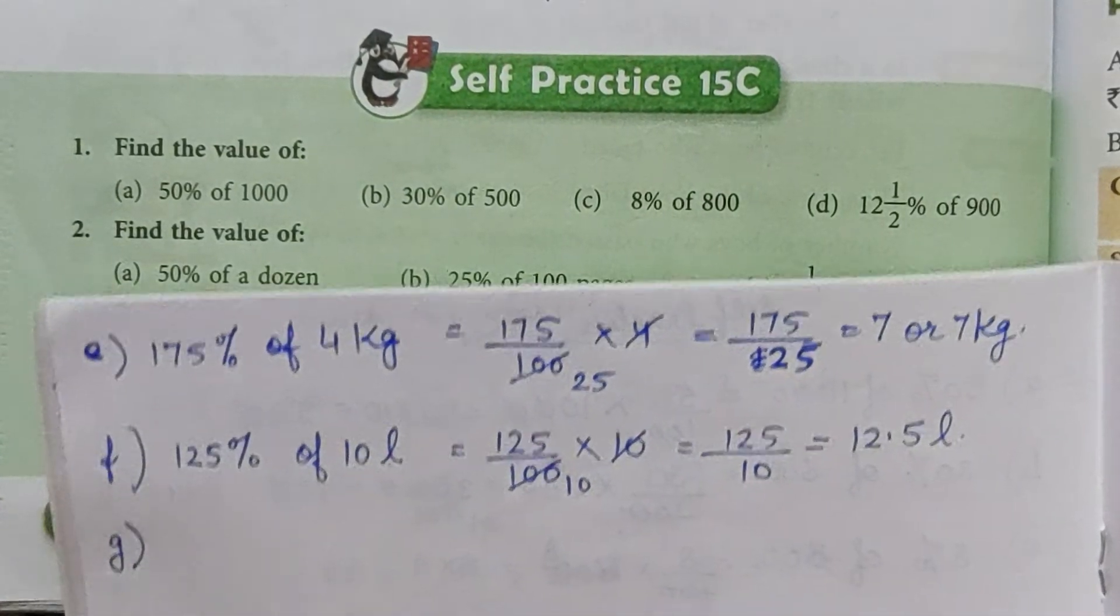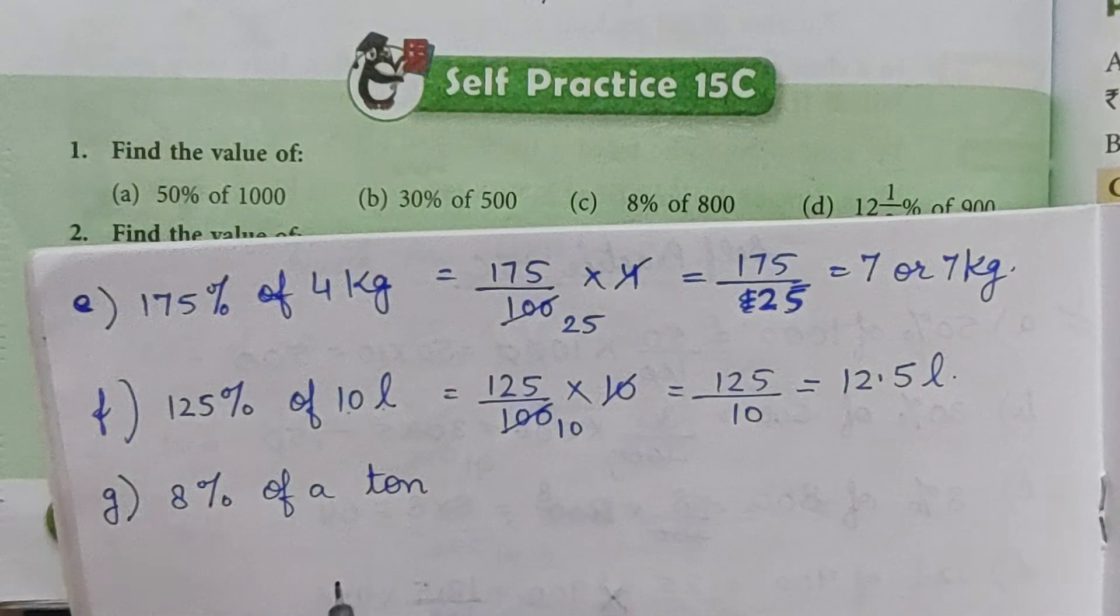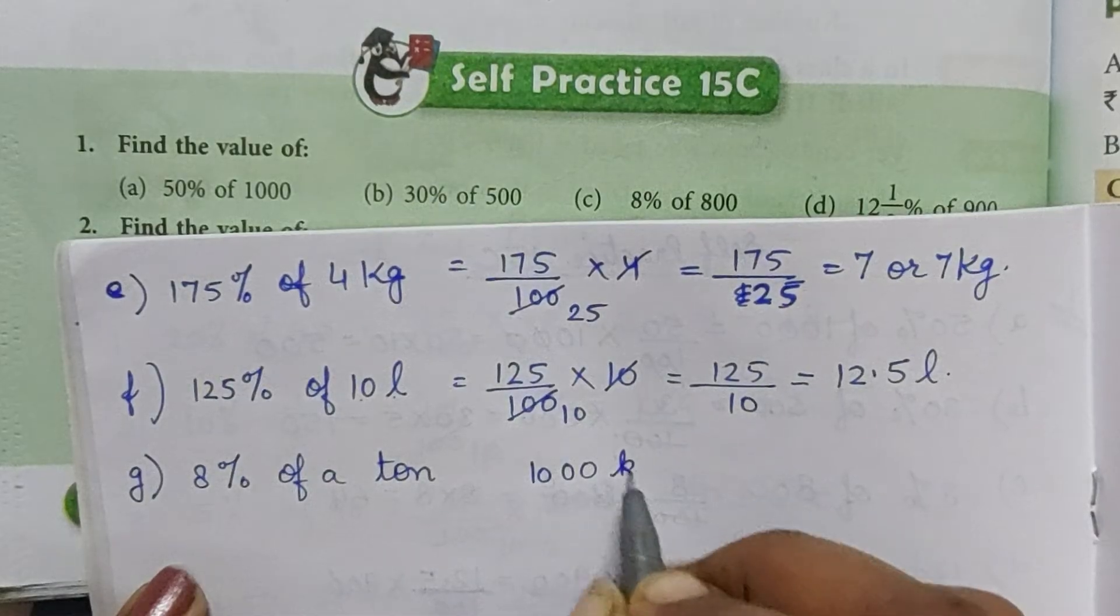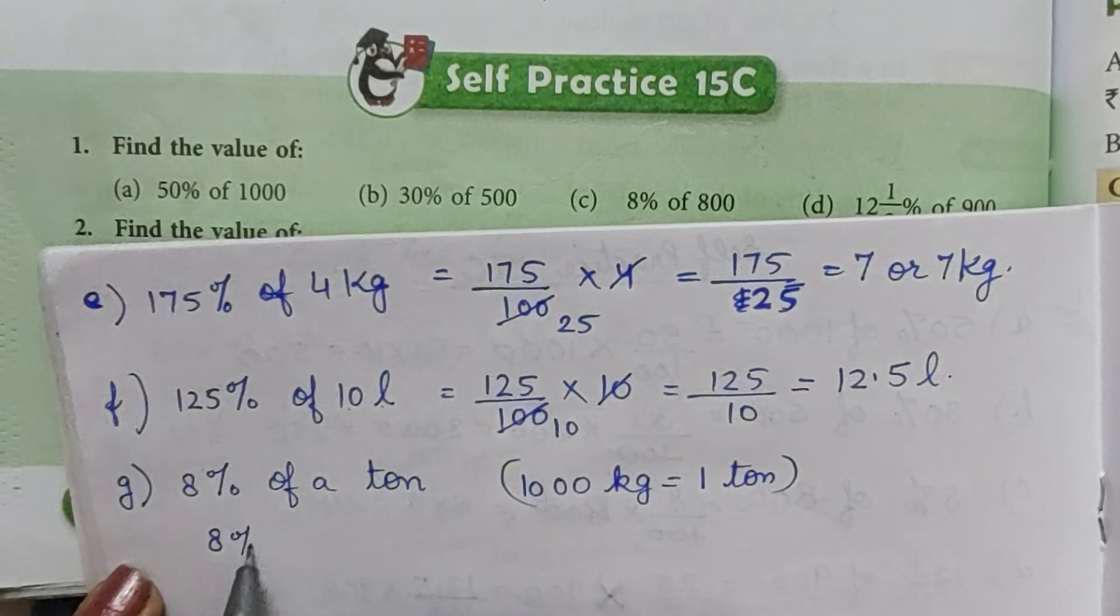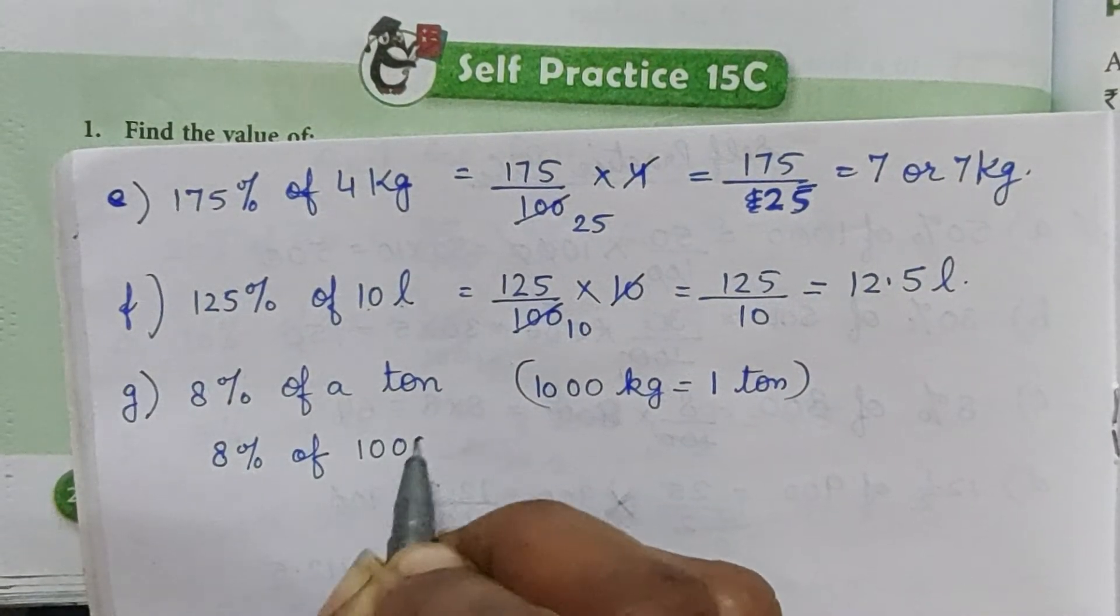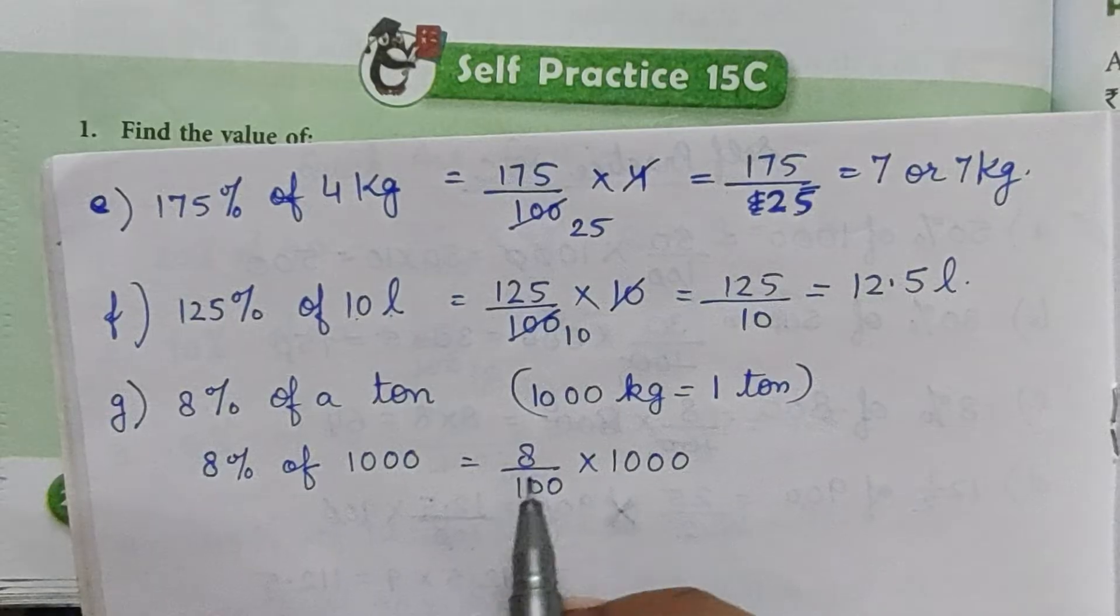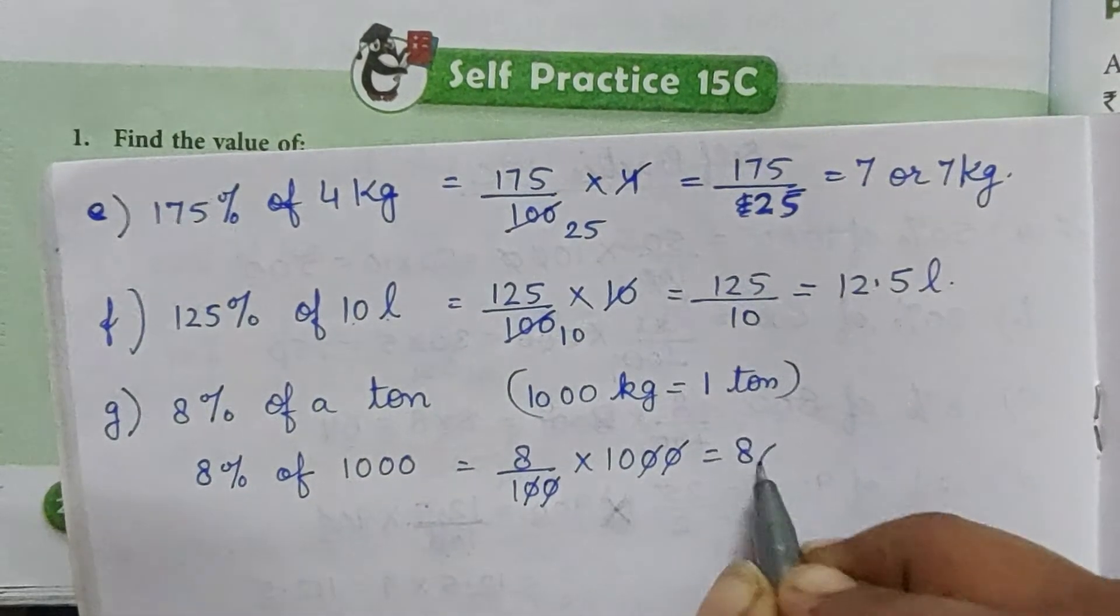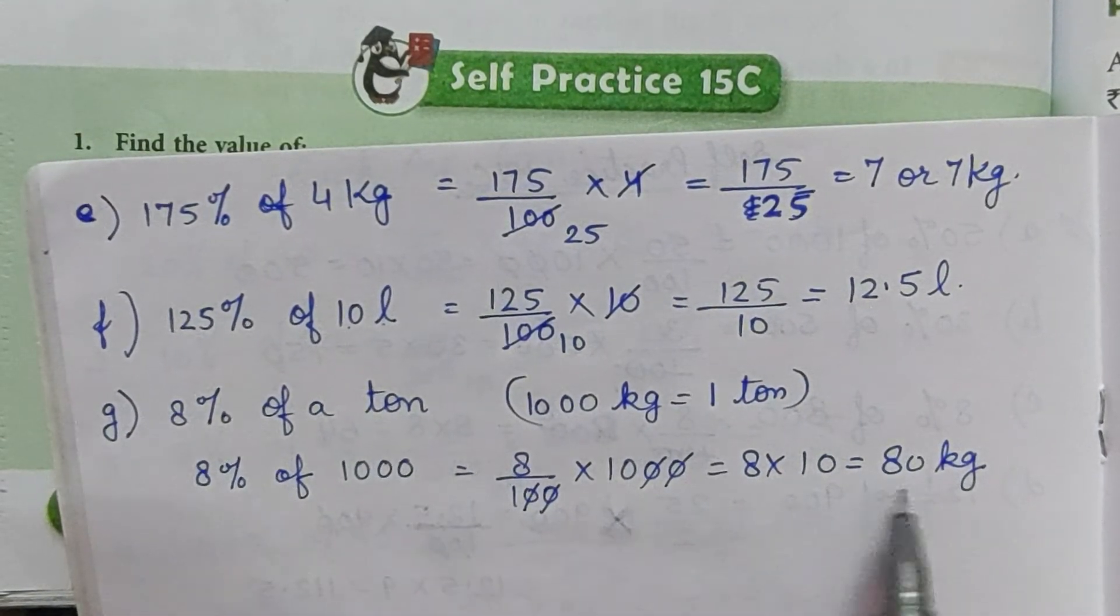Part g: 8% of a ton. Here, a ton is 1000 kg equals 1 ton. It means 8% of 1000, which is 8 by 100 into 1000. 8% equals 80 kg. So 8% of a ton is 80 kg.